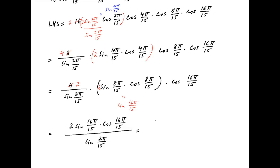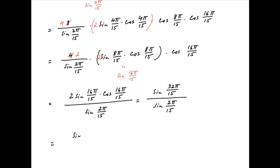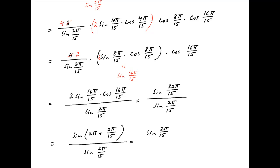Now sin of 32π upon 15 can be written as sin of 2π plus 2π upon 15. Therefore the left hand side is equal to sin of (2π + 2π/15) divided by sin of 2π upon 15. Since sin(2π + θ) = sin(θ), the numerator simplifies to sin of 2π upon 15. This divided by sin of 2π upon 15 equals 1, which is the right hand side. This completes the proof.